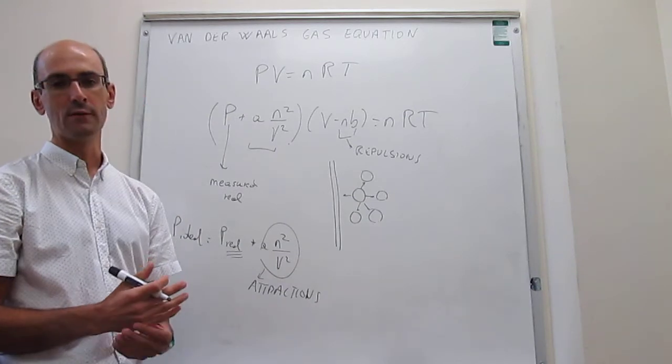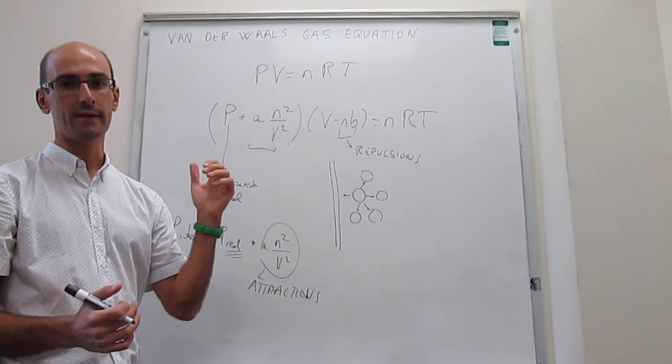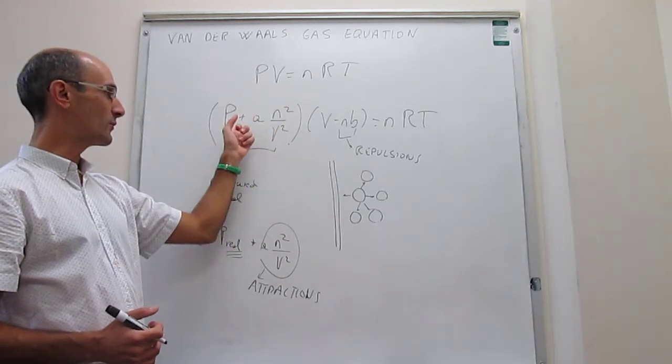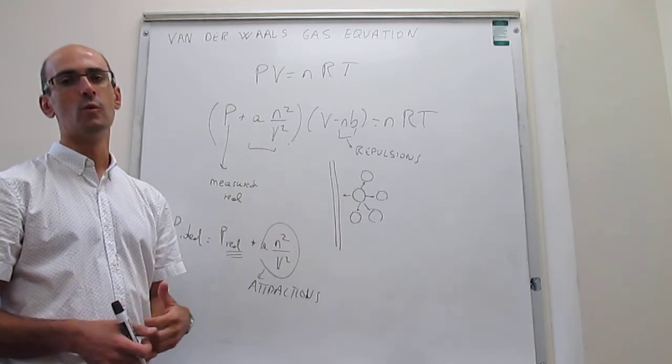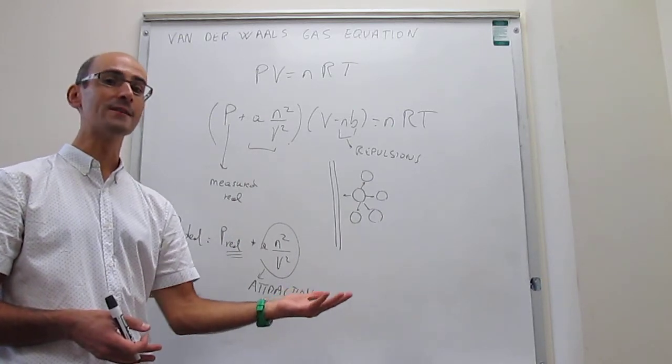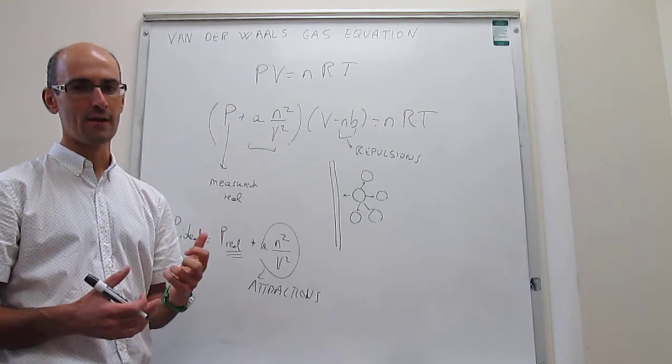Okay? So, again, we will see a couple of examples in the homework where you will actually be able to compare the pressure as calculated by the ideal equation of state, and then the pressure as calculated by the Van der Waals equation of state, and then establish whether the differences that you see between them are due to either a predominance of attractive forces or a predominance of repulsive forces.